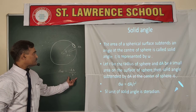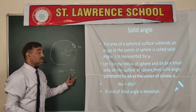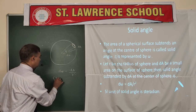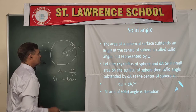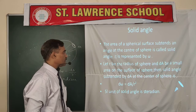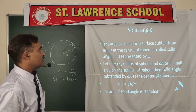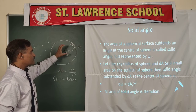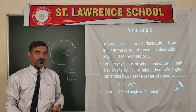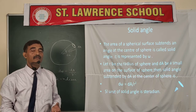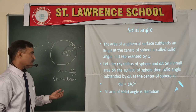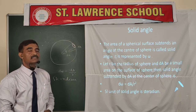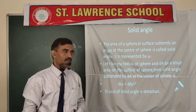The magnitude of the solid angle is dA/R², and the unit is steradian — this is the SI unit for the solid angle. The area on a spherical surface subtends an angle in the form of a cone at the center of the sphere, and that angle is known as the solid angle. Its value is given by dA upon R², and it is represented by d-omega, which is the small solid angle for that element.